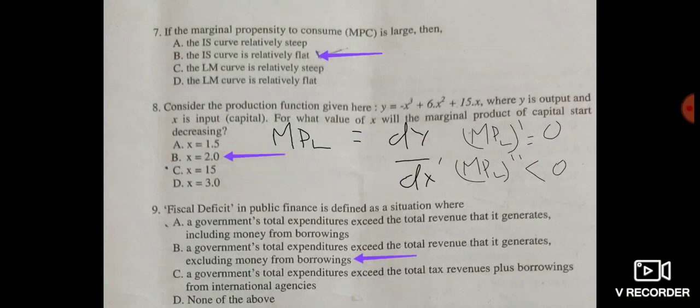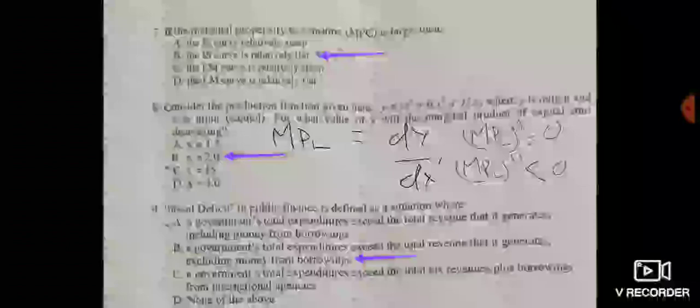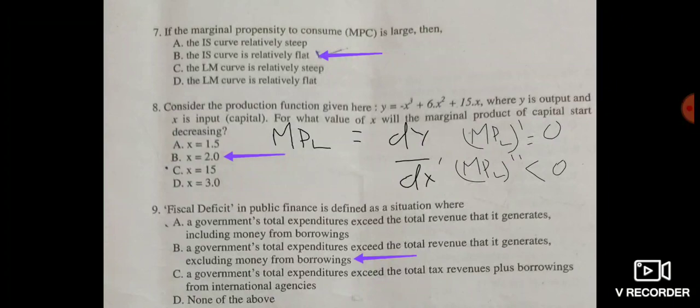Question seven: if the marginal propensity to consume (MPC) is large, then — given options are: the IS curve is relatively steep, the IS curve is relatively flat, the LM curve is relatively steep, or the LM curve is relatively flat. MPC and MPS affect the shape of the IS curve. If MPC is large, the IS curve becomes relatively flat. The correct answer is option B.